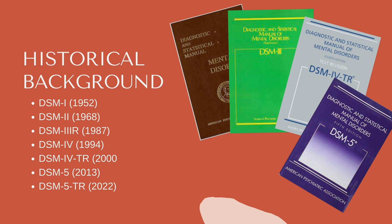The DSM-3 was revised in 1987, resulting in the publication of the DSM-3-R. This revision made minor changes and clarifications to diagnostic criteria but largely retained the structure and diagnostic categories of the DSM-3.